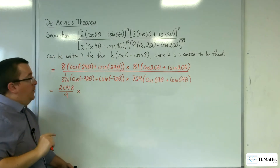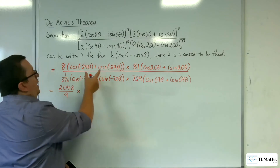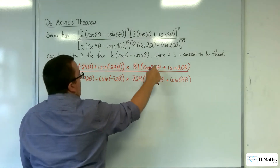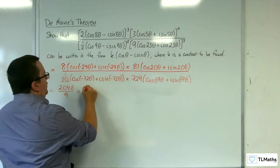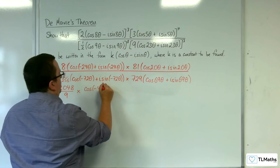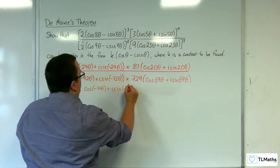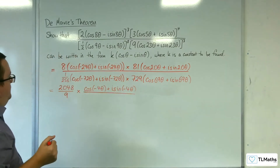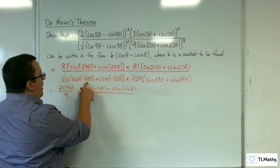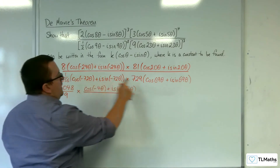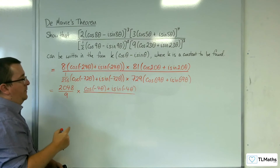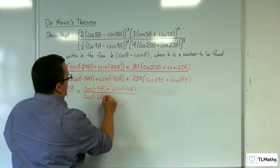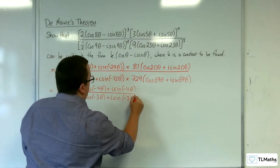When you're multiplying complex numbers together, you can add the arguments. So we've got minus 24 theta plus 20 theta, so minus 4 theta — giving cosine of minus 4 theta plus i sine of minus 4 theta. In the denominator, we have minus 72 theta plus 69 theta, so minus 3 theta. So we've got cosine of minus 3 theta plus i sine of minus 3 theta.